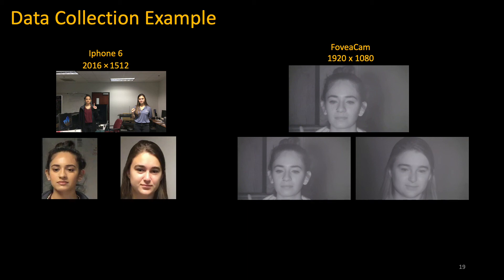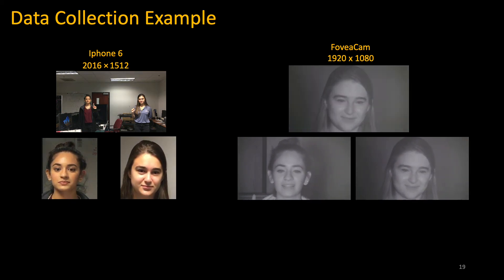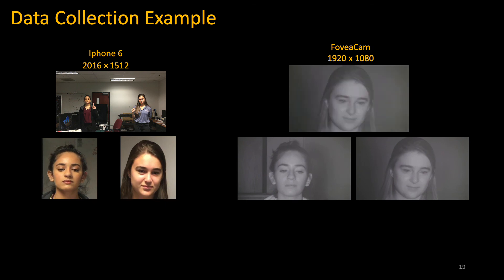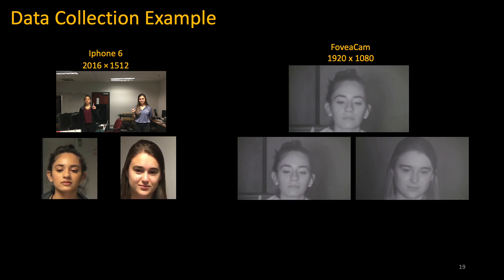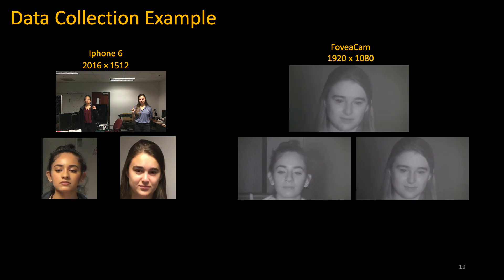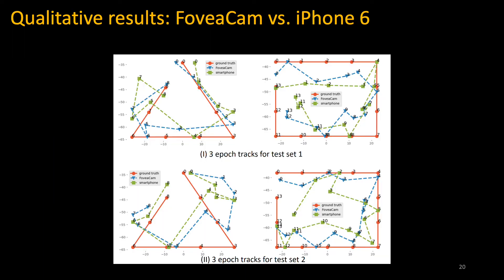We also fine tune the network with iPhone data at three meters to account for the eye angle difference. Here's an example of data collection with the iPhone 6 and our FoveaCam. Here is a qualitative comparison between FoveaCam and the eye camera. The first row is one test set and the bottom row is another. Ground truth is in red, FoveaCam is in blue, and the iPhone 6 is in green.